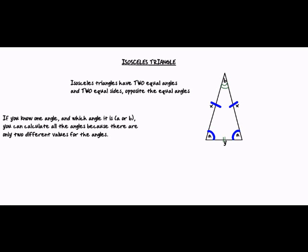And if we know one angle, and which angle it is, whether it's angle A, one of the two similar angles, or angle B, the different angle, you can calculate all of the angles because there are only two different variables for the angles. We have two different values, so if we know one, then we just have to solve for one unknown.